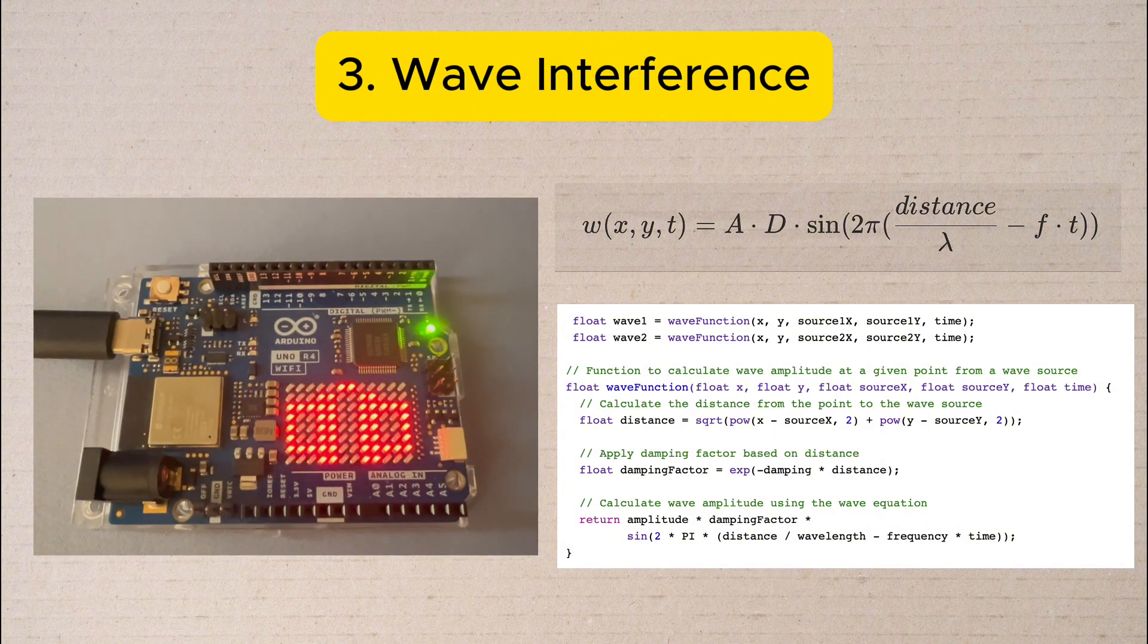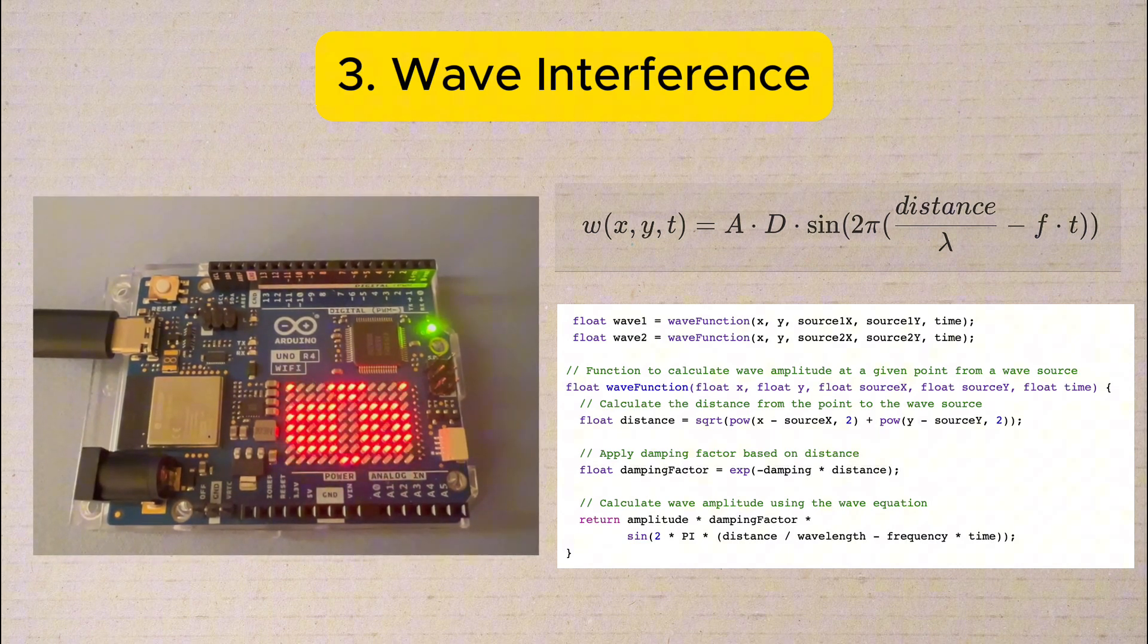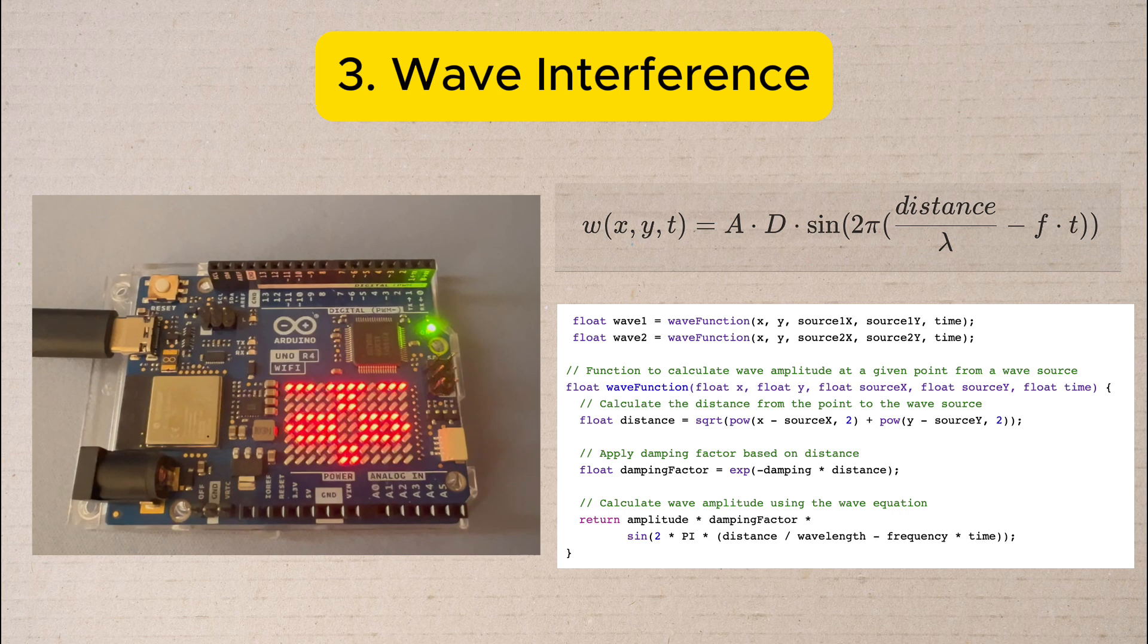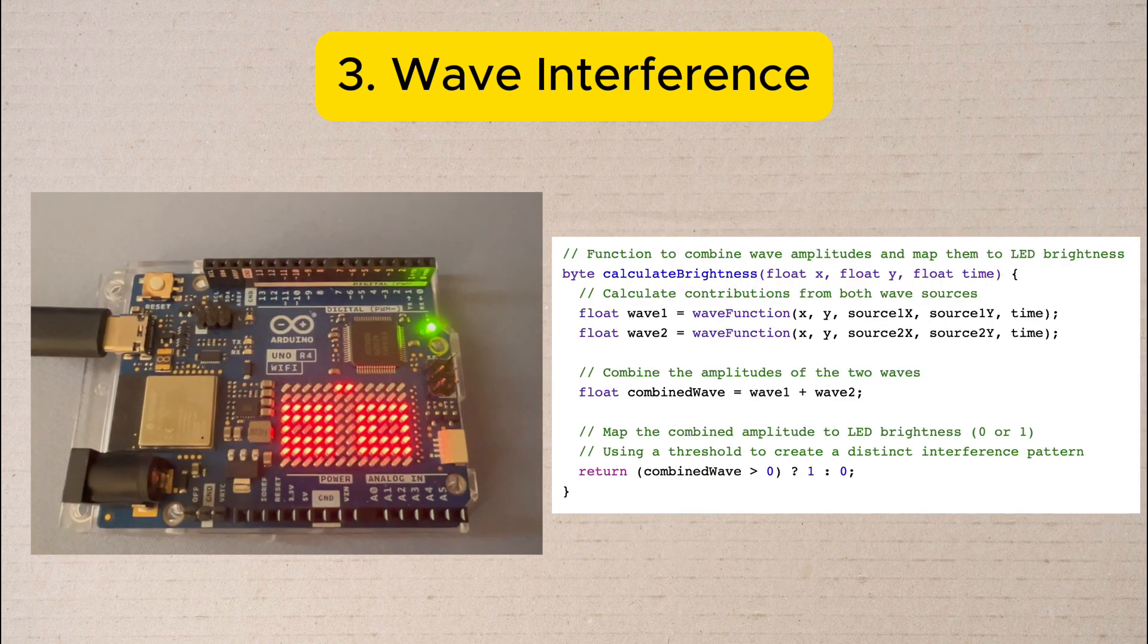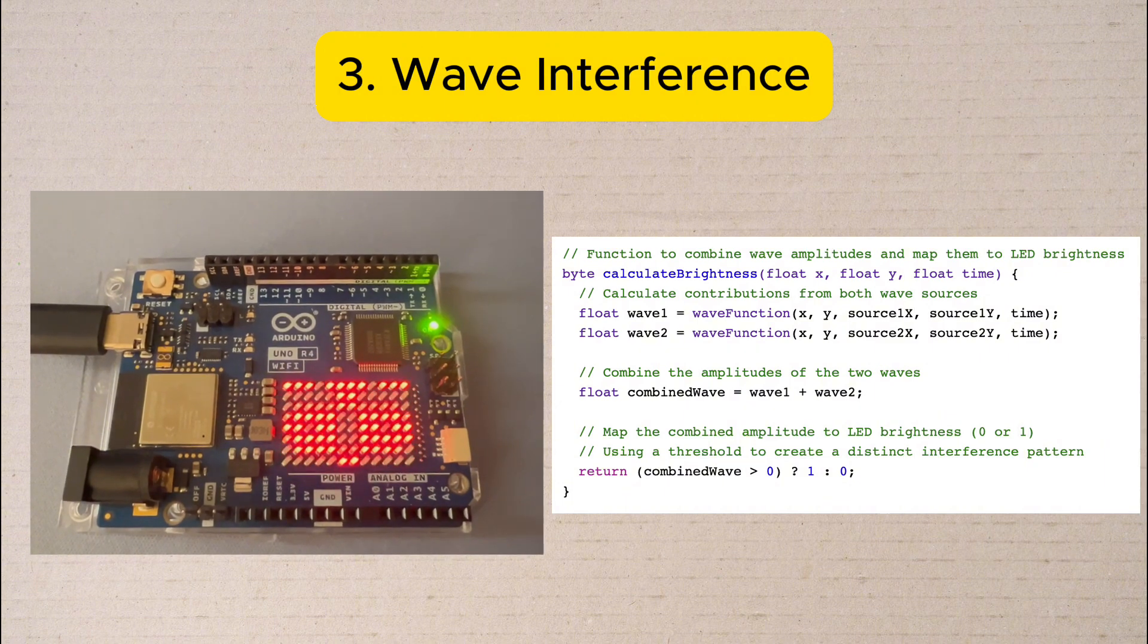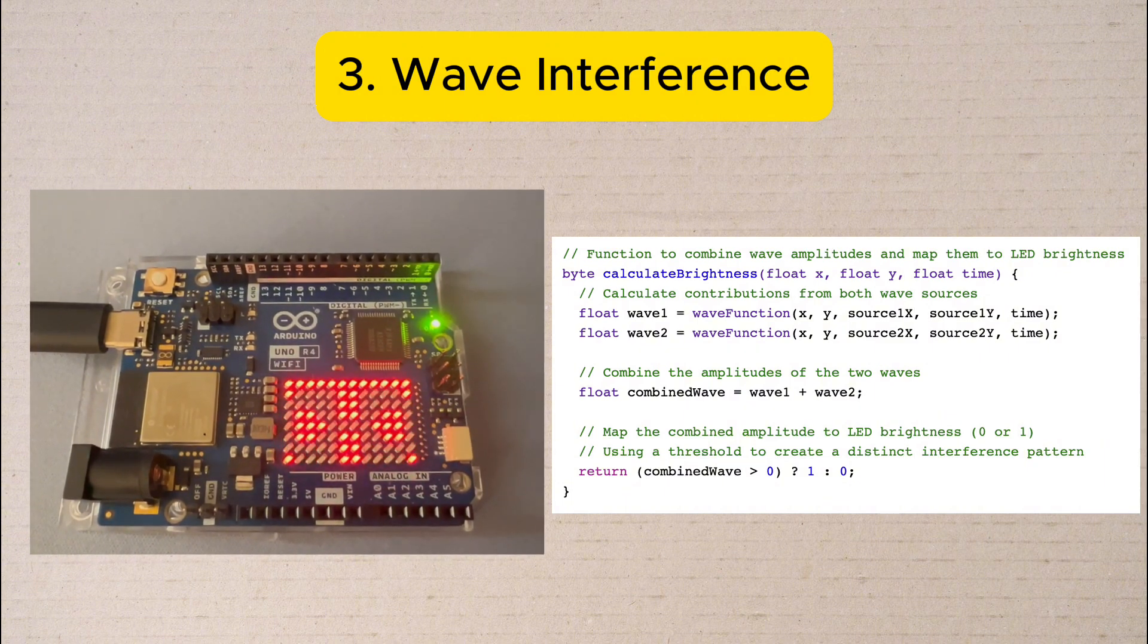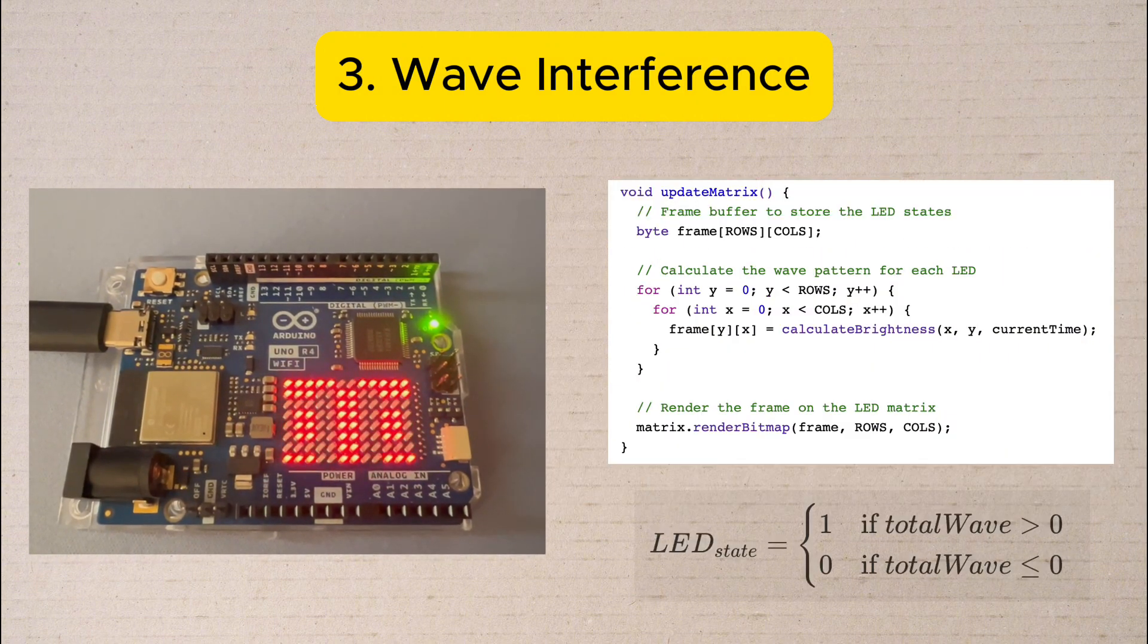As waves travel they get weaker with distance just like a real wave. When the waves meet they combine—this creates bright spots where waves add together and dark spots where they cancel out.